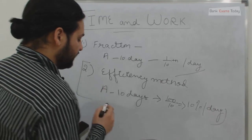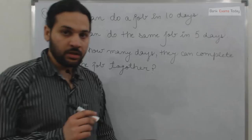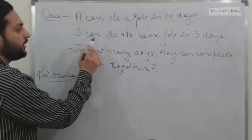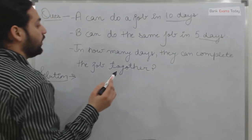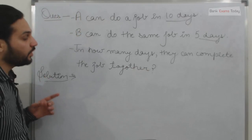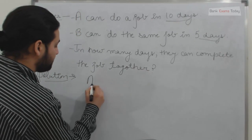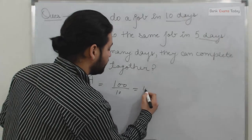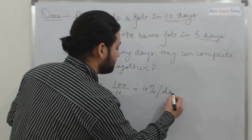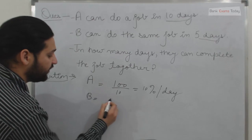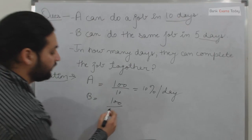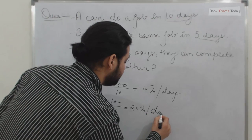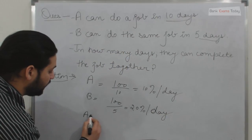Let's take an example. If A can do a job in 10 days and B can do the same job in 5 days, how many days will they take to complete the job if they work together? The efficiency of A is 100 divided by 10, which equals 10 percent per day. Similarly, the efficiency of B is 100 divided by 5, which equals 20 percent per day.